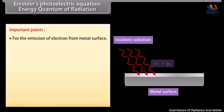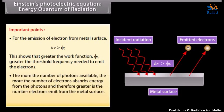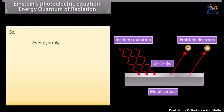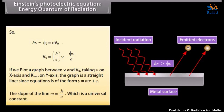For the emission of an electron from the metal surface, hν must be greater than phi-zero. This shows that the greater the work function phi-zero, the greater the threshold frequency needed to emit the electron. The more the number of photons available, the more electrons absorb energy from photons and therefore the greater the number of electrons emitted from the metal surface. Since K-max equals eV0 and K-max equals hν minus phi-zero, we get: hν minus phi-zero equals eV0. Thus V0 equals (h/e)ν minus (phi-zero/e). If we plot a graph between ν and V0, taking ν on the x-axis and K-max on the y-axis, the graph is a straight line. The slope m equals h/e, which is a universal constant.